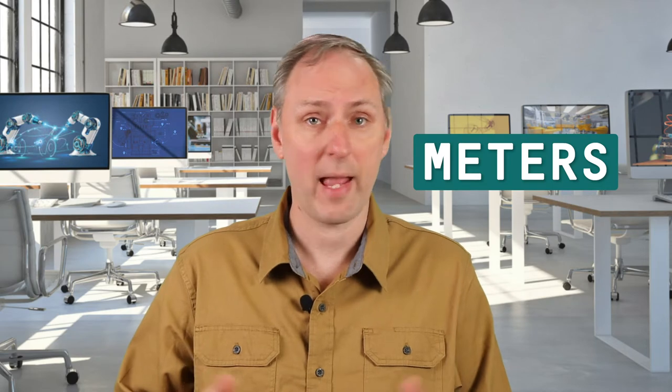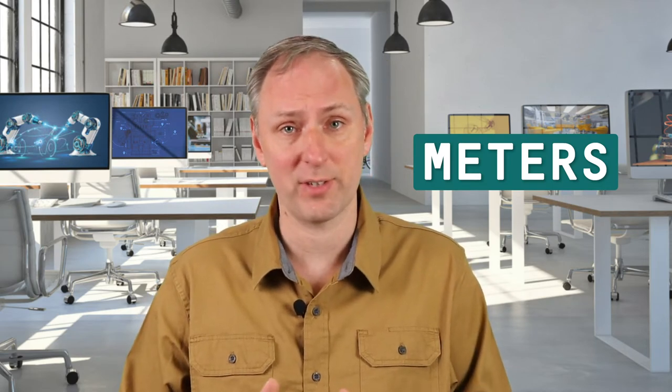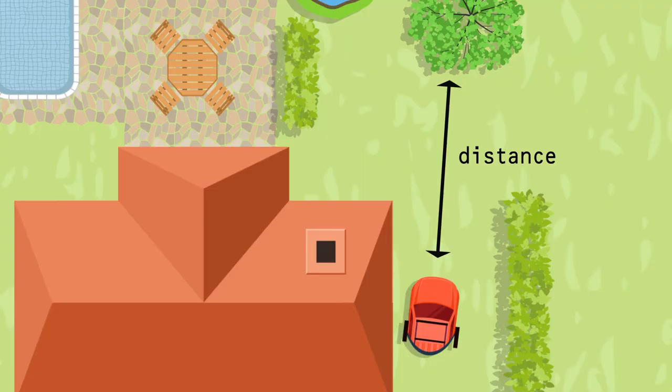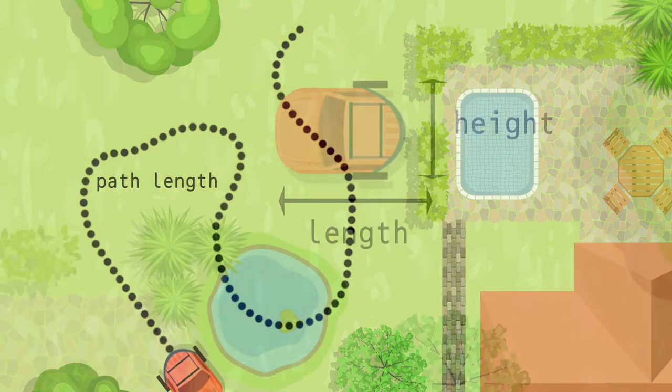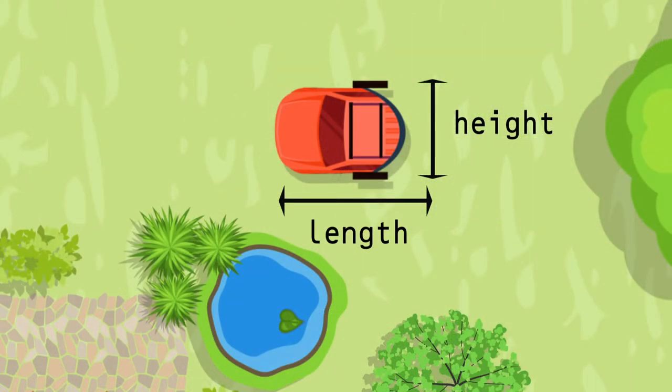We use meters anytime the robot has to measure a distance or size. We measure how far objects are away from the robot in meters, how far the robot has traveled in meters, and we describe the robot's dimensions in meters. When we talk about measuring things, however, meters aren't always the most convenient.